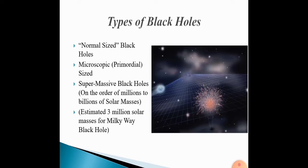Types of black holes: normal sized black holes, microscopic, primordial size, supermassive black holes on the order of millions to billions of solar masses. Estimated 2 million solar masses for the Milky Way black hole.